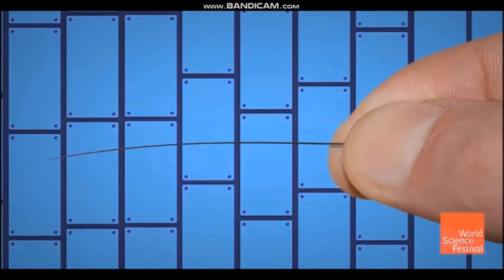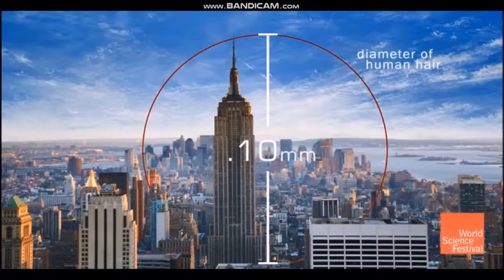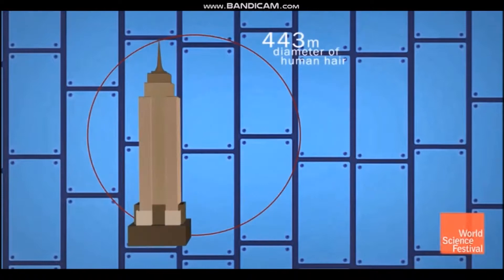So here we have a strand of human hair, which is about a tenth of a meter. If we were to compare this strand of hair to the height of the Empire State Building, it'd be about 150 stories tall. Using this same scale, if you were to compare this to a human red blood cell, it would be about 10 stories tall.